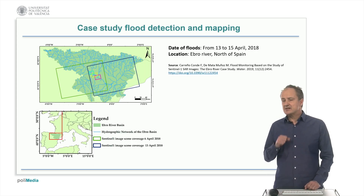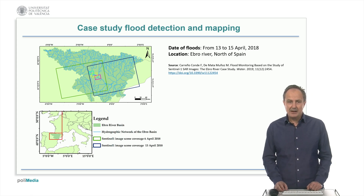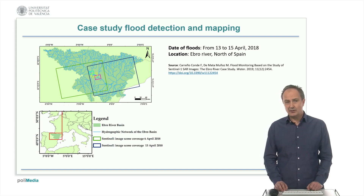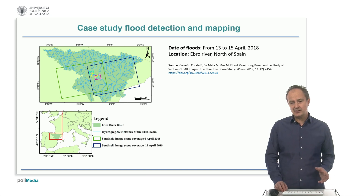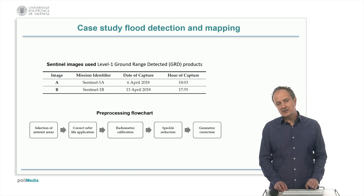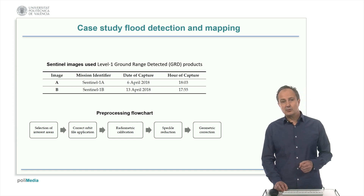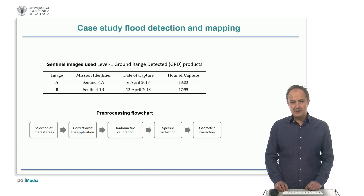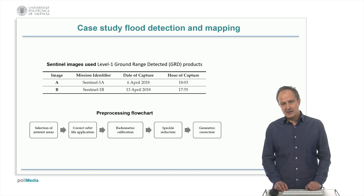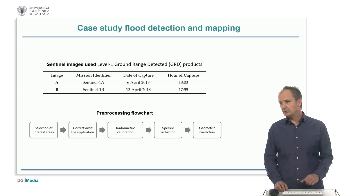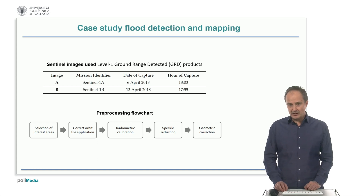Now let's see a real case study of rapid flood detection and mapping using Sentinel-1 images. The event was located in the Ebro River Basin in the north of Spain and happened between the 13th and 15th of April 2018. Two Sentinel-1 images were used: one from April 6, before the floods, and the other from April 13, during the peak of the floods. The preprocessing step included the selection of areas and right orbits, a radiometric terrain correction, speckle reduction with statistical filters, and geometric terrain correction.